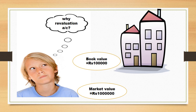So to remove such disputes at the time of admission, change in profit sharing ratio, retirement, or death, we make revaluation account. This is why we also call it the profit and loss adjustment account — because it adjusts the values of assets and liabilities at the time of admission, retirement, death, or change in profit sharing ratio.